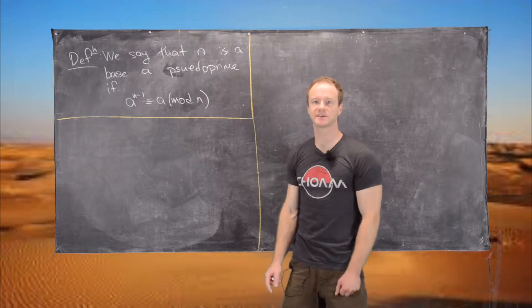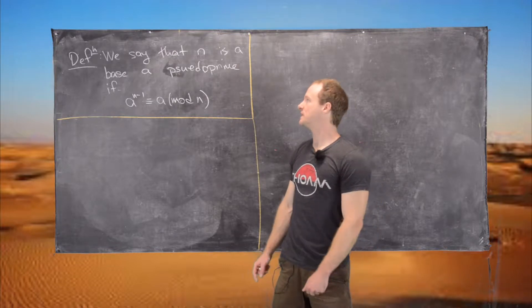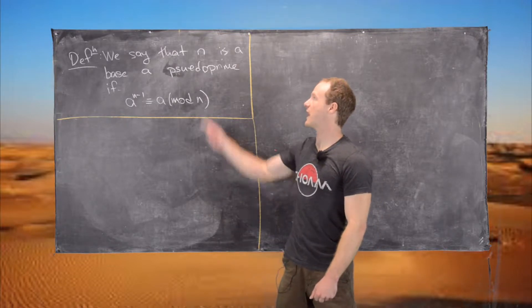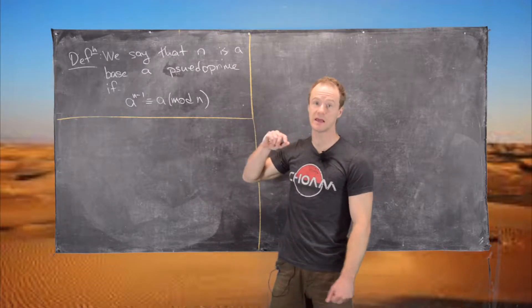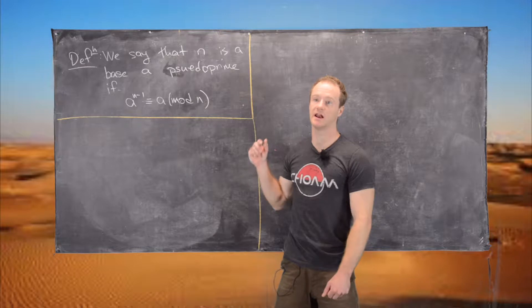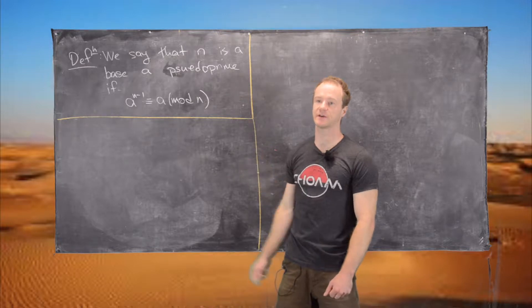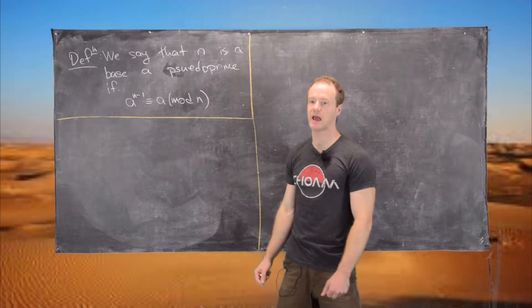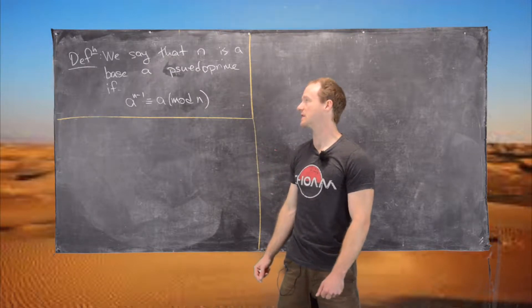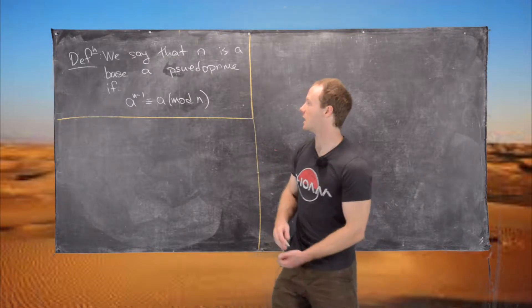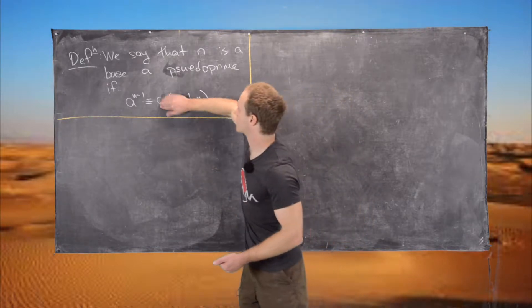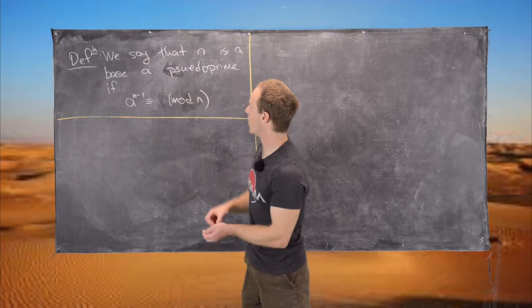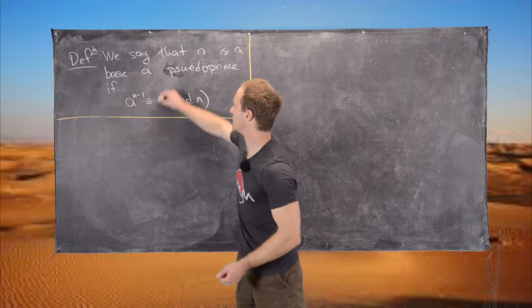Let's recall Fermat's Little Theorem: if you have a prime p and a number a that's relatively prime to p, then a to the p minus 1 is congruent to 1 mod p.